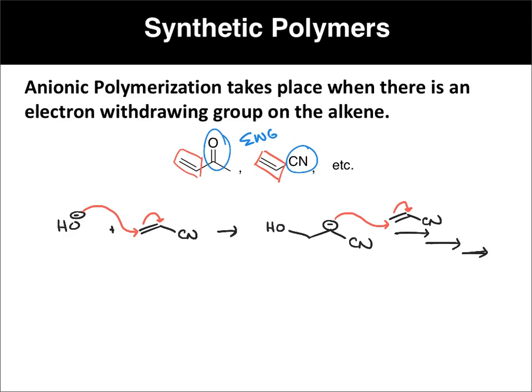If we want to draw what the polymer unit would look like — here's our vinyl cyanide. Basically, if you want to draw the polymer: erase the pi bond, add a new bond to each carbon, put it in parentheses, and add an N.